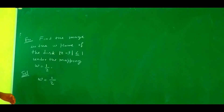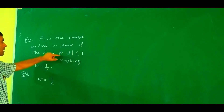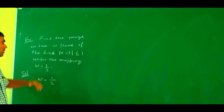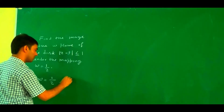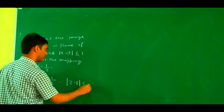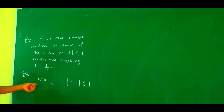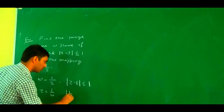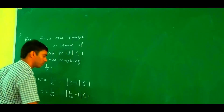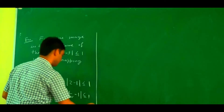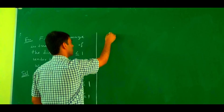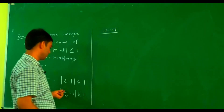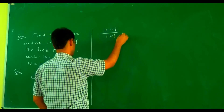The mapping is w = 1/z. Our aim is to express the condition in terms of u and v. Since w = 1/z, we have z = 1/w. Substituting, the condition |z − 1| ≤ 1 becomes |1/w − 1| ≤ 1.